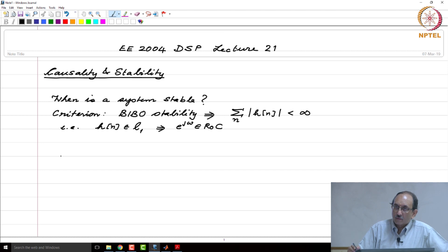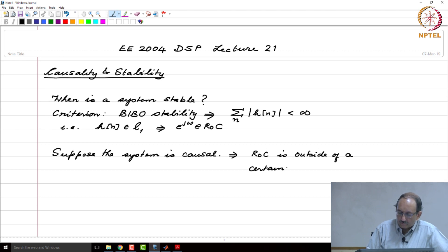Now, typically systems in practice are causal. Suppose the system is causal. This implies that ROC is outside of a certain circle.